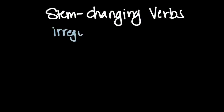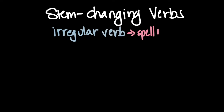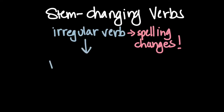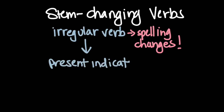Stem-changing verbs are a very common type of irregular verb. They're irregular because they have a spelling change. This spelling change only happens in the present indicative — in other words, the present tense. Present indicative is just a fancy term for present tense.